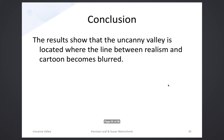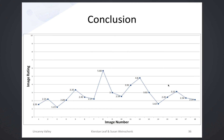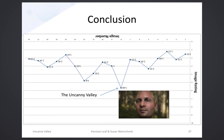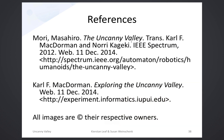The results show where the uncanny valley is located within the images and where the line between realism and cartoons becomes blurred. The graph started at 1.55, climbed into the valley, and then came back out. If we flip the graph, we can actually see where the uncanny valley is located, as that is our highest-rated image. These are the references to other information concerning the uncanny valley. Thank you.